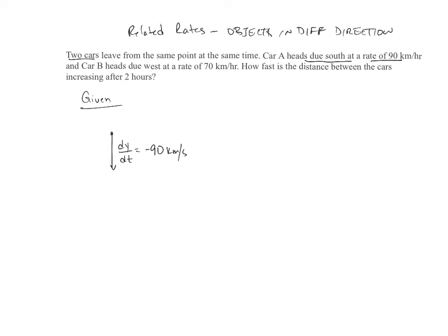And car B heads due west. So due west is this way. The reason why, if you forget the negatives it won't matter, because you're going to end up squaring these, because we have a Pythagorean theorem involved here. So they'll end up taking care of themselves regardless. So car B heads due west at a rate of 70, and we'll put negative kilometers per hour. So we've got a rate for A and a rate for B.